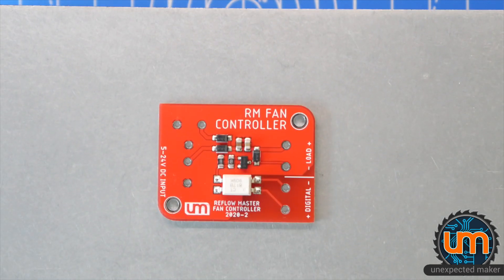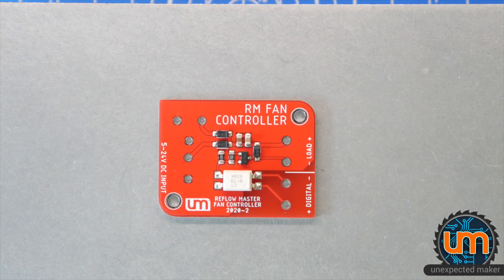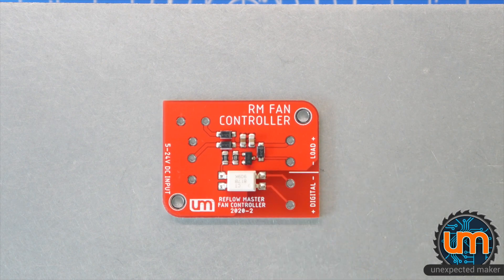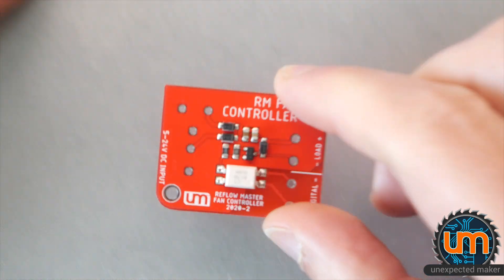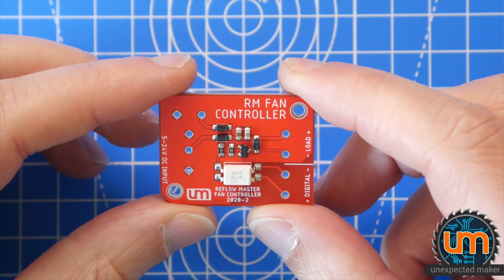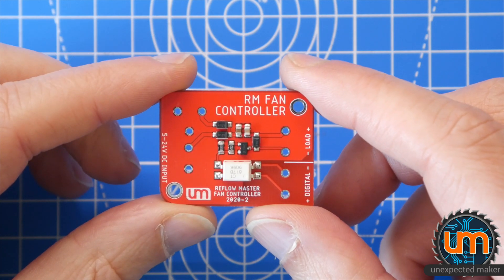And just like that, out of the oven. That looks pretty good. Everything seems to be sitting on their pads correctly. Nice. Let's let it cool down. That's pretty good. Then we need to do some through hole soldering. Let's keep going.